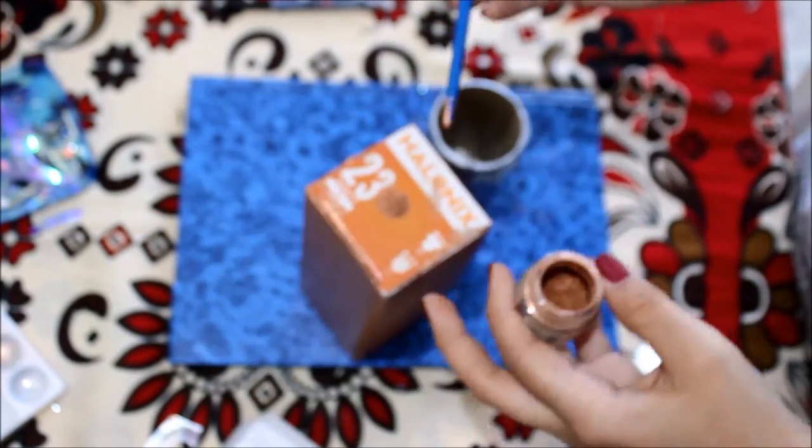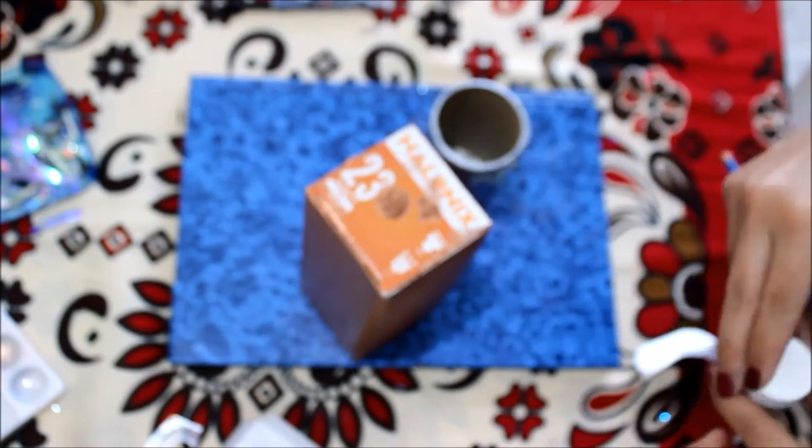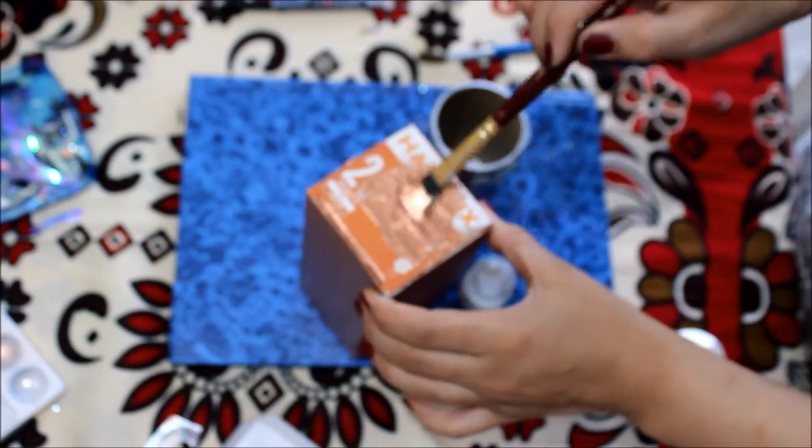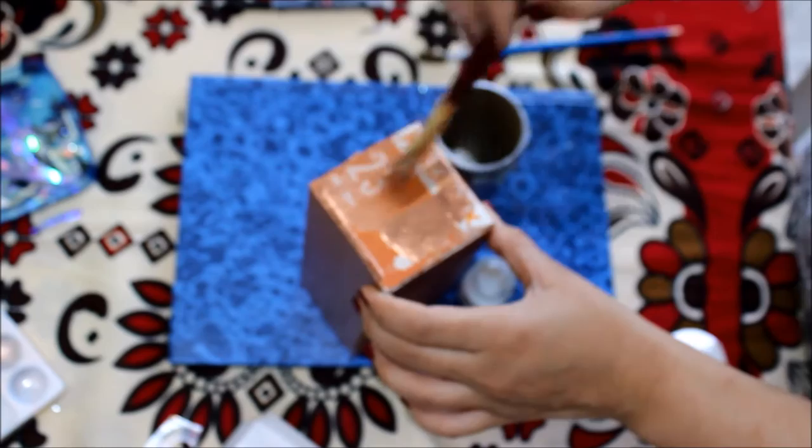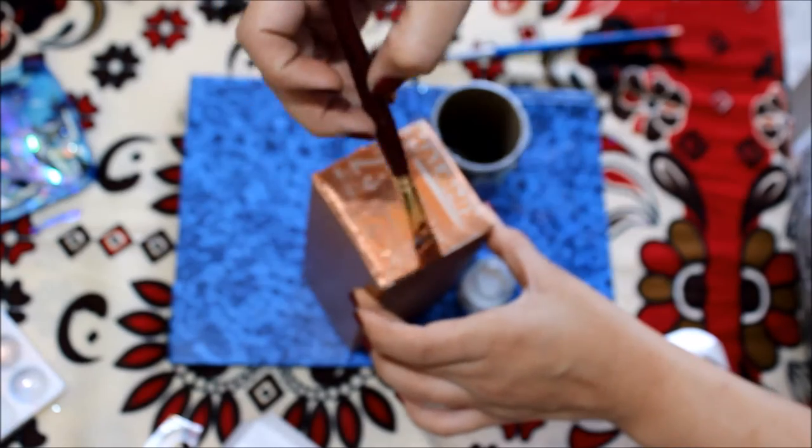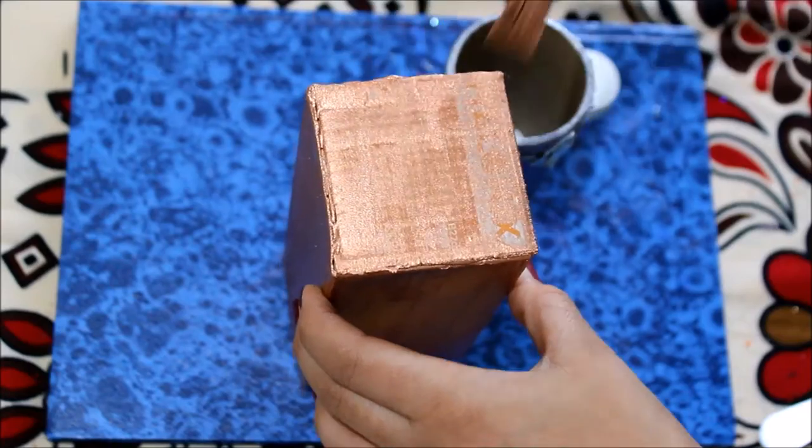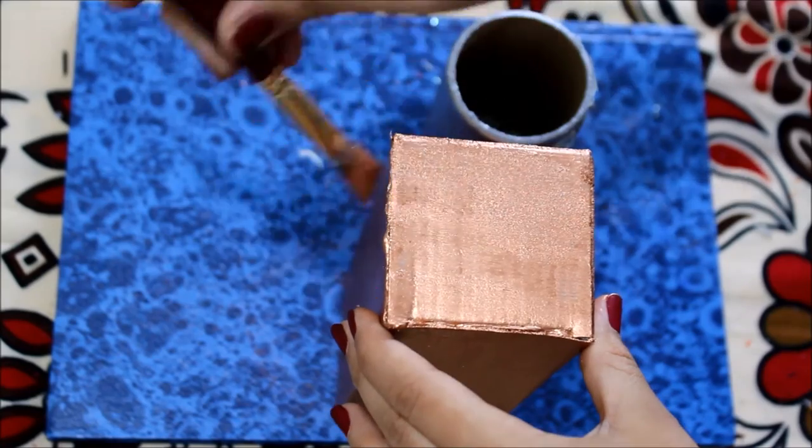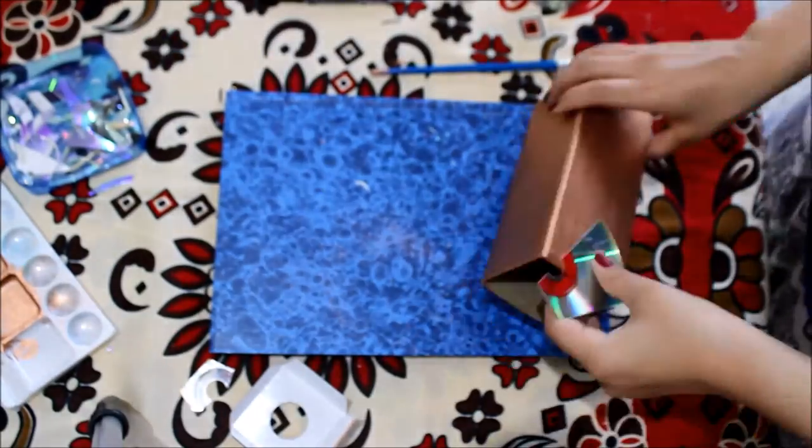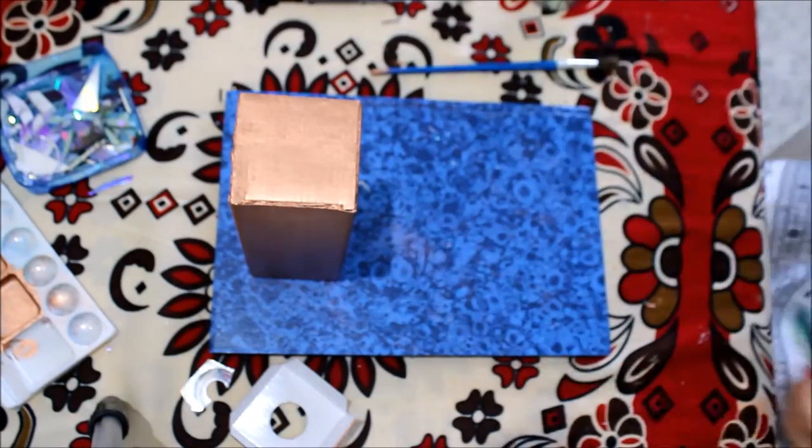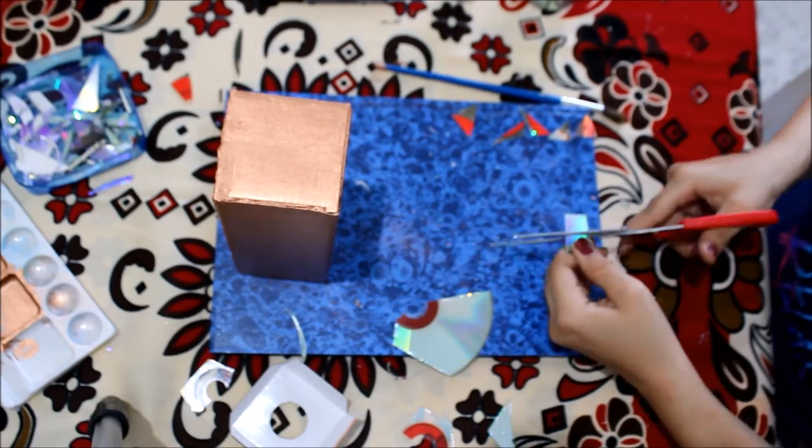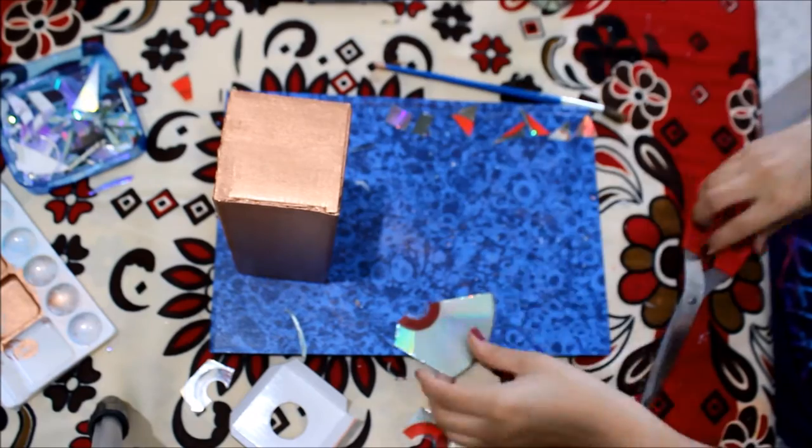And now we start painting the container. I've gone for a metallic bronze color and that's what I'm covering it with. You can go for any color of your choice. After you're done painting it, you can now take the CD and cut it into any shape of your choice and you can start placing it over the container in any pattern you'd like to.